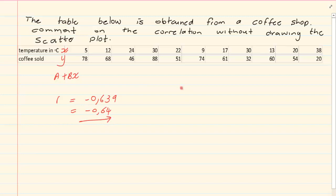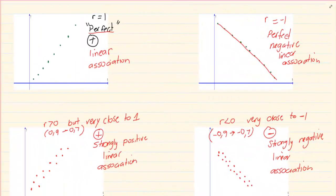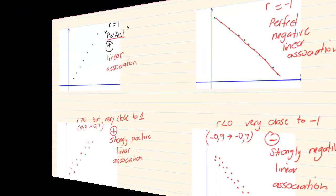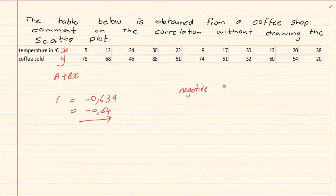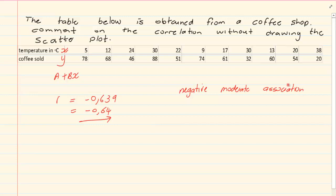Then we know it's definitely a negative. Then if you see minus 0.63, 64 we can say, listen, it's not strong. So it's more or less like moderate. It's between moderate and strong. So we're going to go for moderate. So what we're going to say, it's negative, moderate, association. Negatively moderate association.